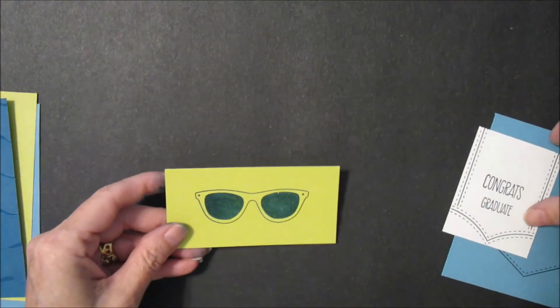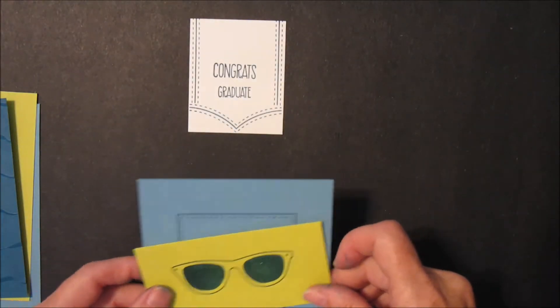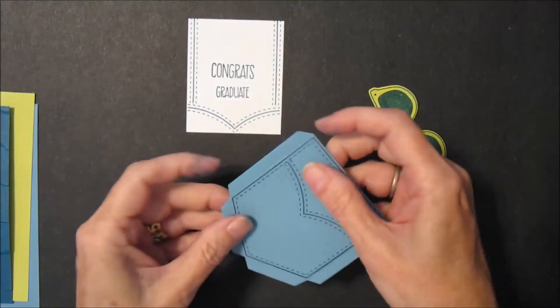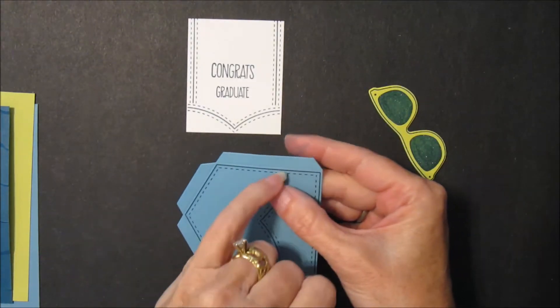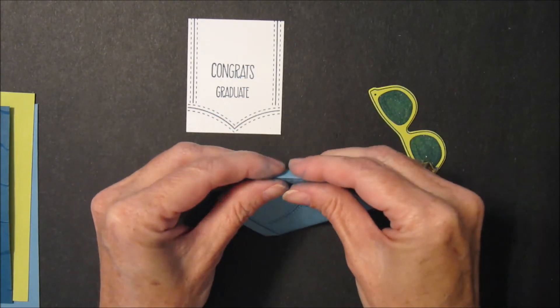And then we're going to cut out these two pieces. And I'll be right back with you when I get that cut. Okay, we're back. And you'll see that there are little score lines that were done while we were cutting, so we'll fold those back.